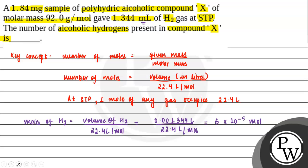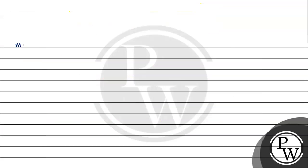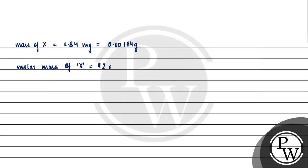Now, let us determine the moles of compound X. We have mass of X is equals to 1.84 milligrams, aur agar hum isko grams mein convert karte hai we will divide this by 1000, so that would be equal to 0.00184 grams. Molar mass of compound X is equal to 92 grams per mole, as provided in the question. So, moles of X is equals to 0.00184 divided by 92 grams, which is equals to 2 multiplied by 10 raised to the power minus 5 moles.